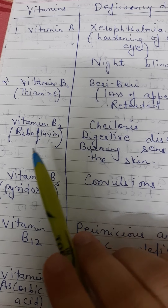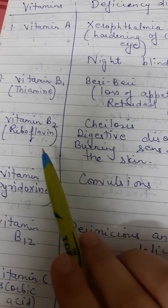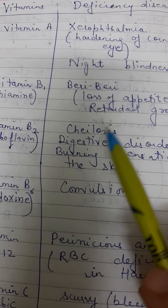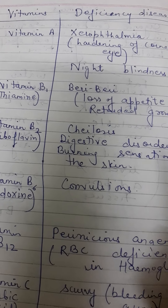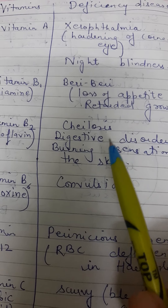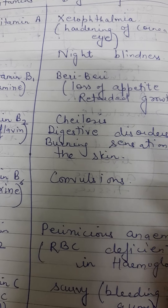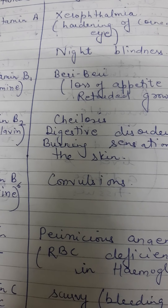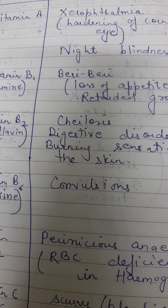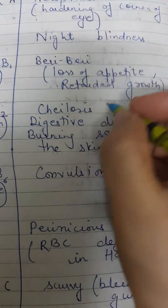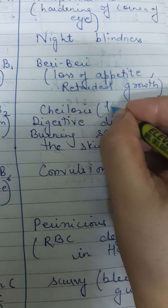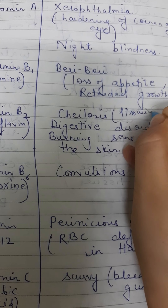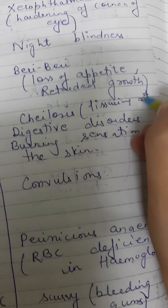Vitamin B2, also known as riboflavin, causes the deficiency disease cheilosis. Cheilosis is characterized by fissuring at the corners of the mouth and lips, as well as digestive disorders.